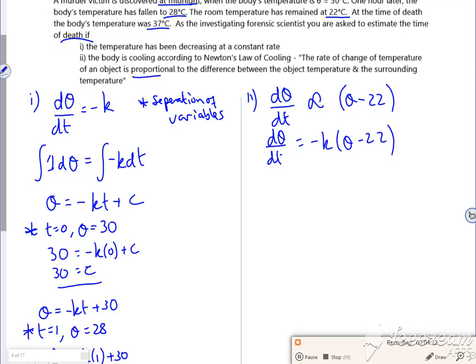So dθ/dt is minus k(θ minus 22). I'm running out of time. I'm just going to show you. I'm going to split it up quickly. So I want dθ/(θ-22) on one side and minus k dt on the other. But the time's running out. I've got a log.